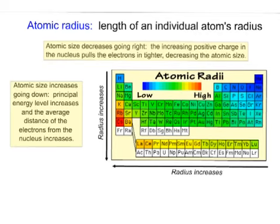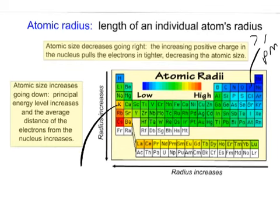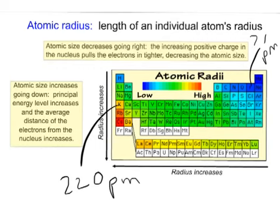To give you some numbers: fluorine happens to be 71 picometers, and a picometer is 10 to the negative 12 meters. Potassium is 220 picometers, which gives you a little idea of the size difference. Obviously, as you go top to bottom on the periodic table you're going to get larger, simply because the energy orbitals are greater — you have electrons farther away from the nucleus, and the atoms just get bigger.